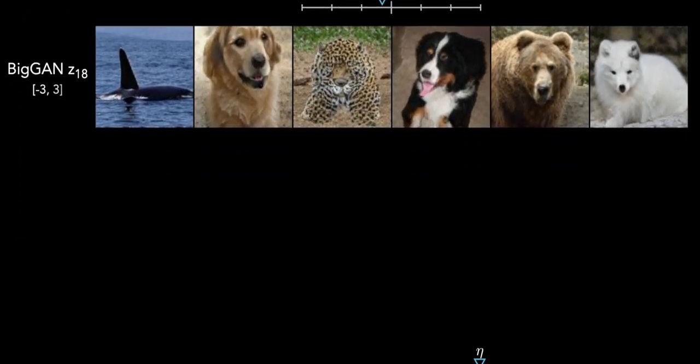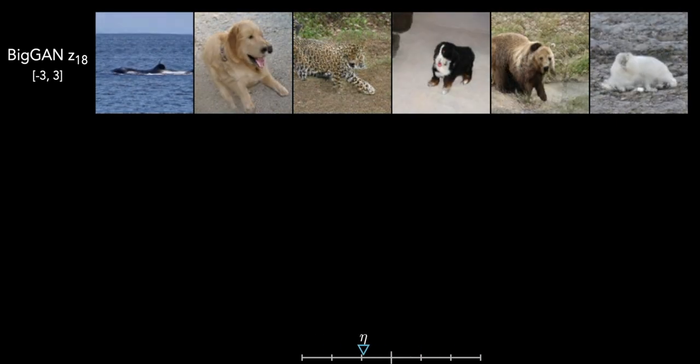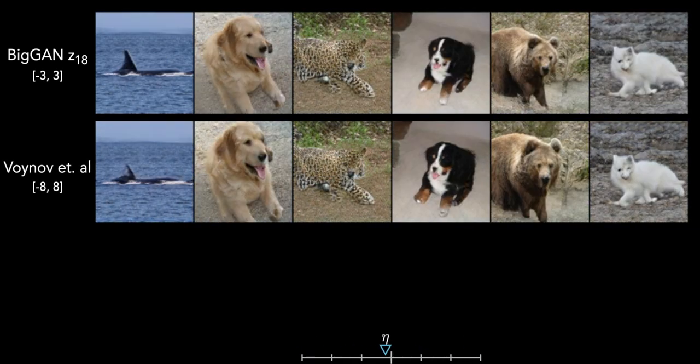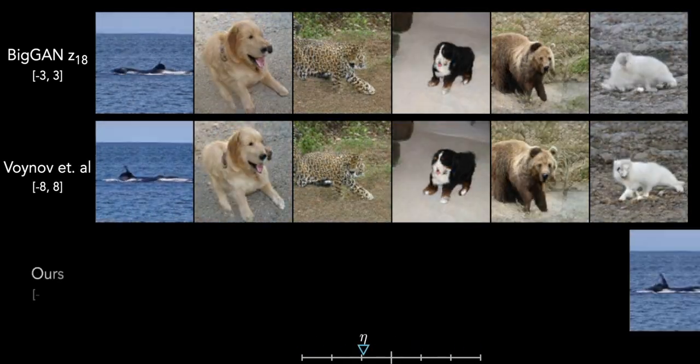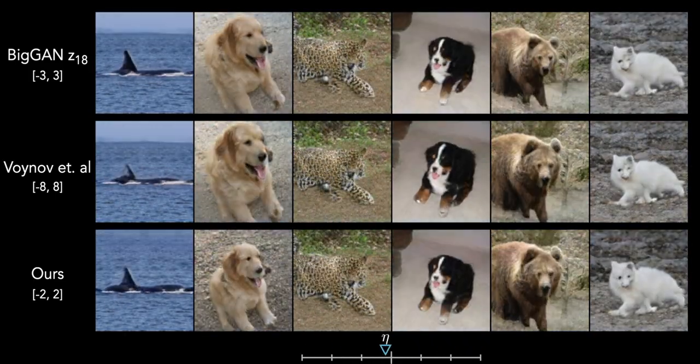Next let's look at zooming. BigGAN does a pretty reasonable job again at disentangling zooming, although we can see that it sometimes flips objects. Here's the zooming direction from Voinov and Babenko, which also makes the image more red. And finally, here's our learned zooming direction. Ours doesn't flip the objects, and it also doesn't change the color of the image.